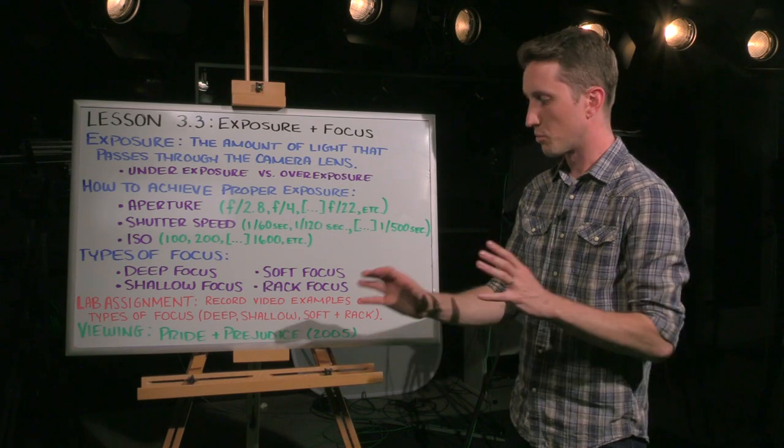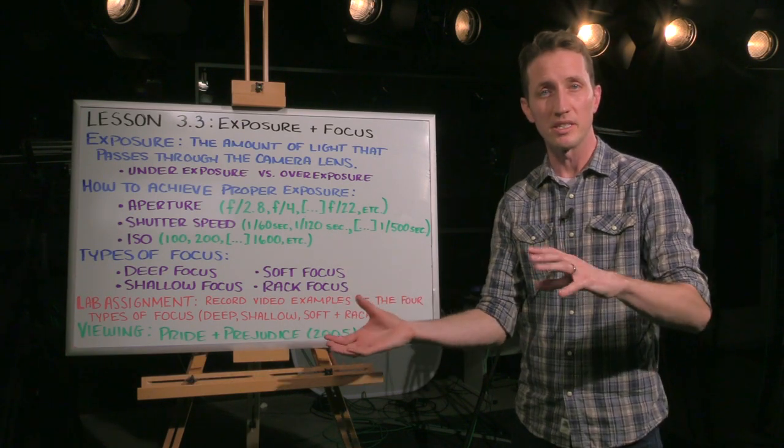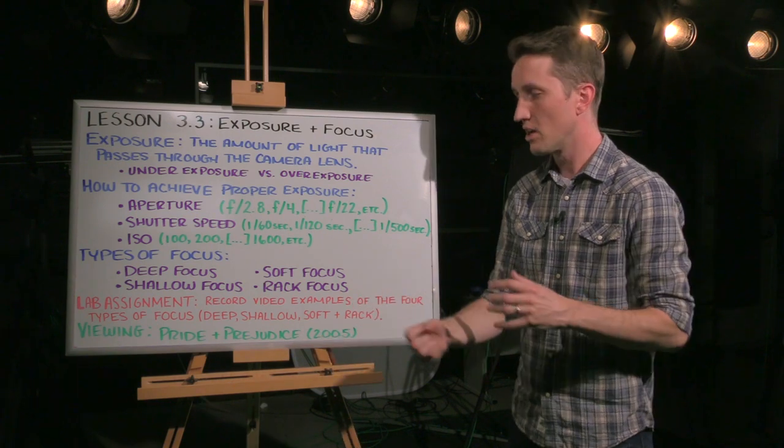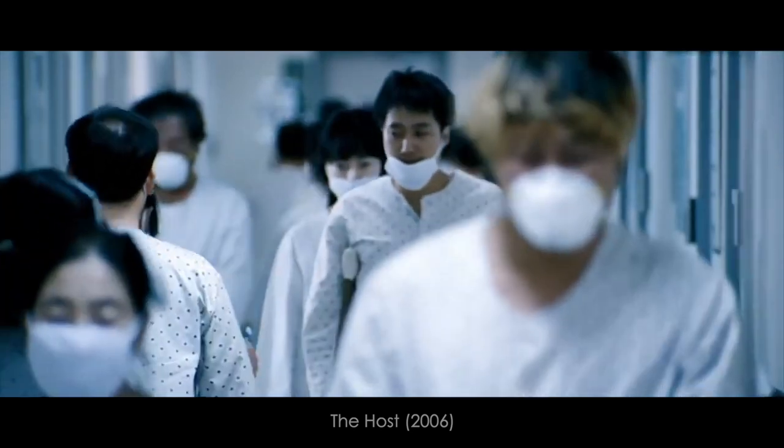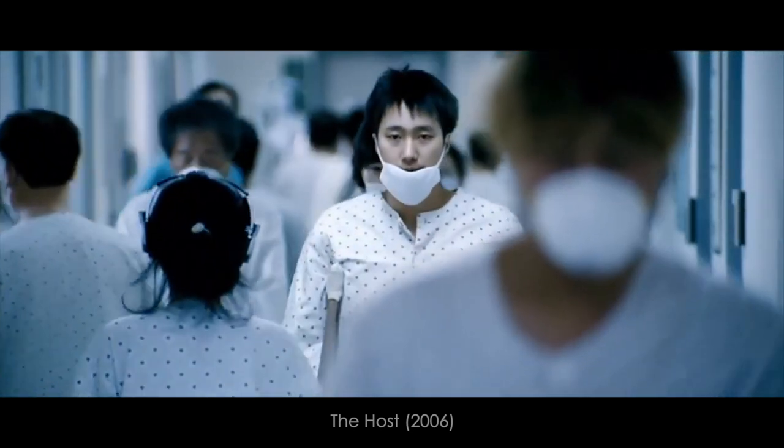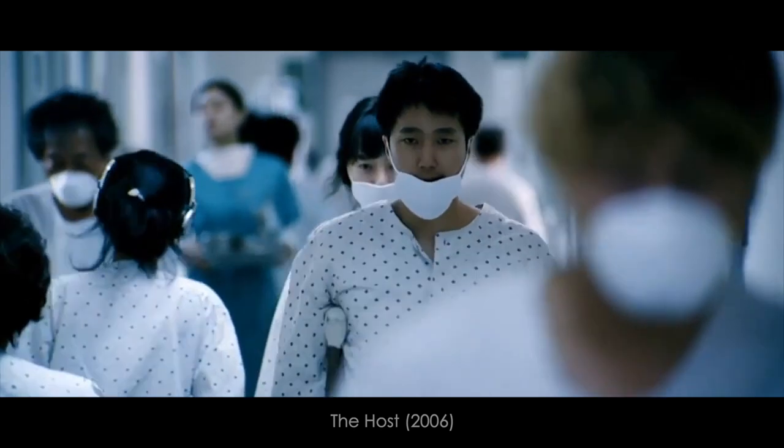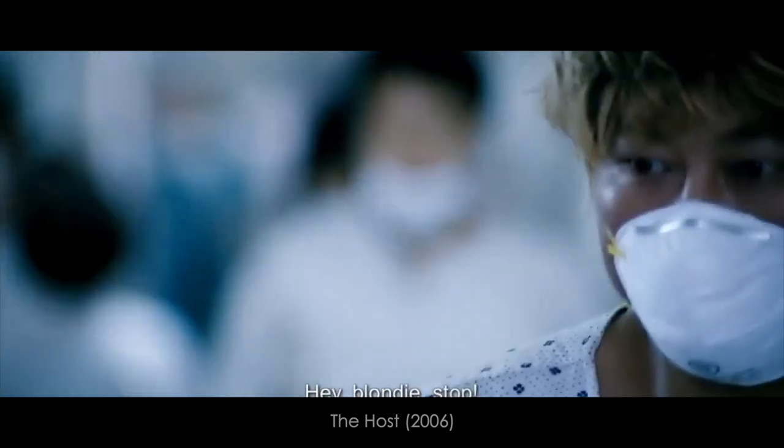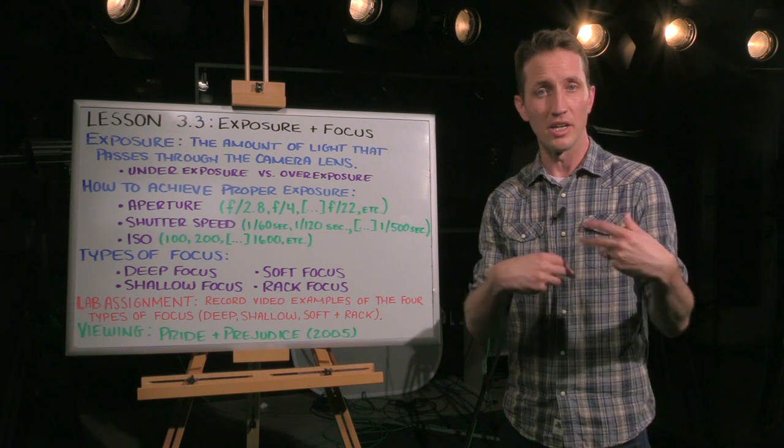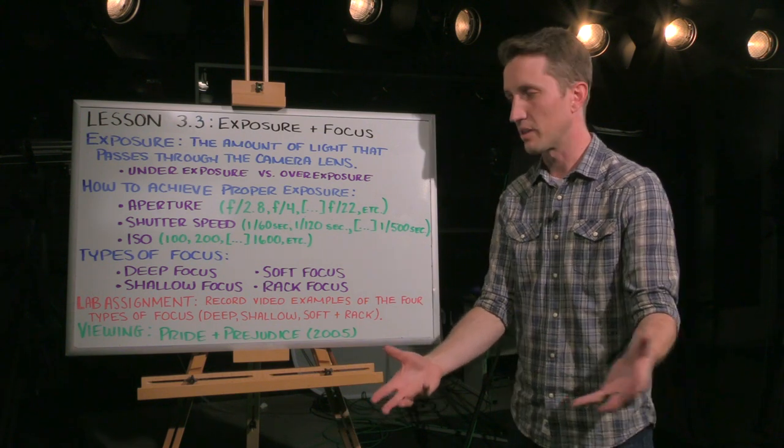Now with rack focusing, we're talking about changing the focus in the middle of a shot without cutting. So let's say you have an image that's in shallow focus. The character in the foreground is in focus. The background is out of focus. And then in the middle of that shot, we're going to adjust the focus or rack focus in order to make the background clear and the foreground blurry or out of focus.